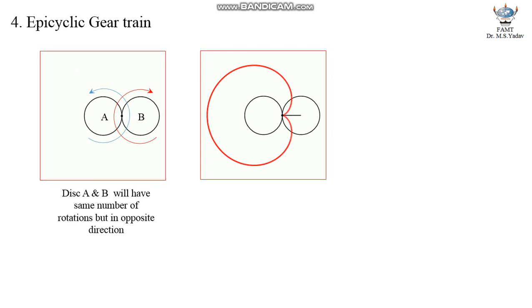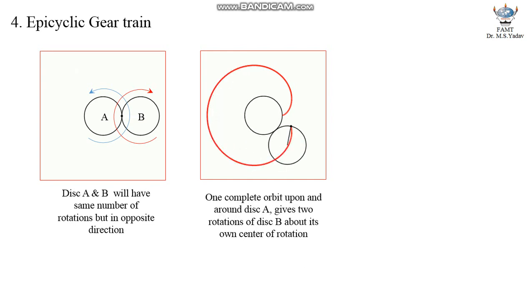For its remaining travel around disc A, it will cover one more rotation about its own center of rotation. So, when disc B is made to move upon and around disc A through one complete turn, it will turn twice about its own center of rotation.